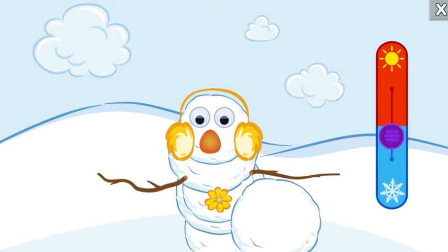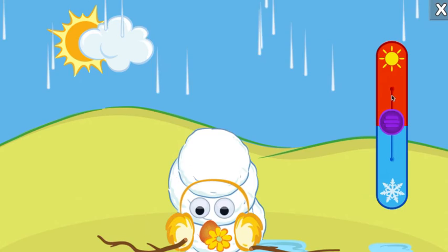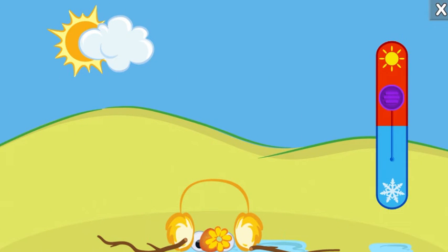Try sliding the purple circle to change the temperature again to see what happens to your snow monster. Whoa, the snow melted when it got warmer. To make it snow again, slide the purple circle back to the snowflake.